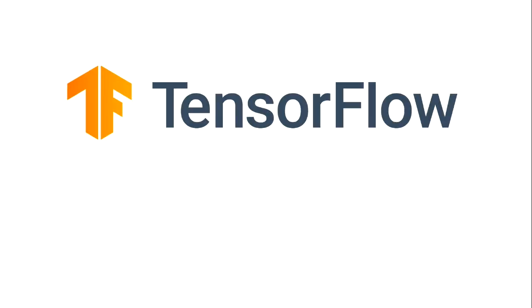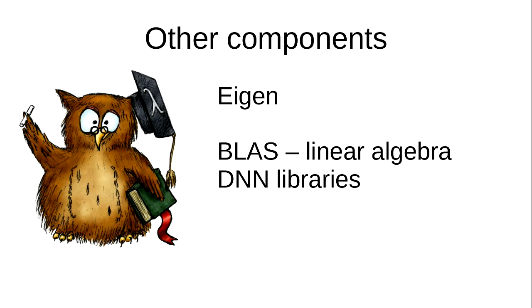One of the problems with TensorFlow is there are a lot of components and third-party software inside it. Eigen is probably the biggest — it's a C++ templating library that does linear algebra, matrices, vectors, and solvers. It also uses CUDA heavily. There are also standard sets of libraries like BLAS (linear algebra) and DNN (neural network expert libraries). These come from GPU vendors like NVIDIA and come with CUDA. You can get them from other places but you have to optimise them for your specific graphics card.